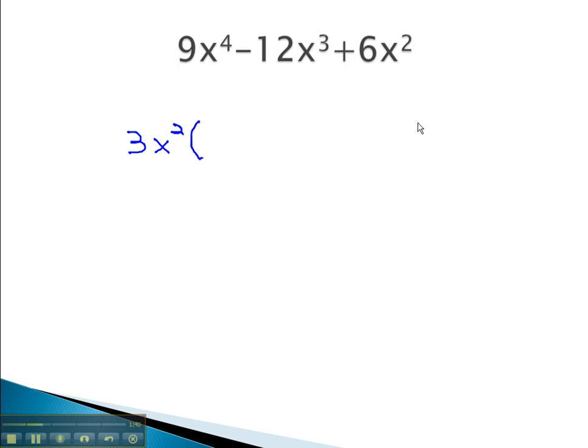3x squared is the greatest common factor, which will go in front of the parentheses. To find out what's left inside the parentheses, we will divide each term by 3x squared to see what we have left.